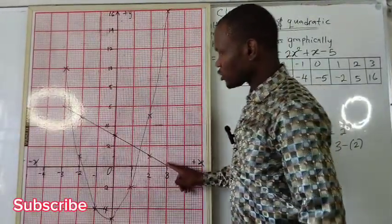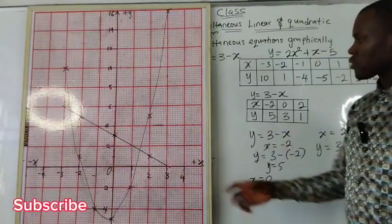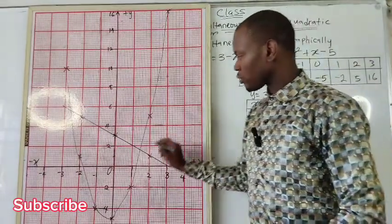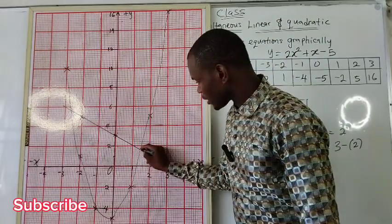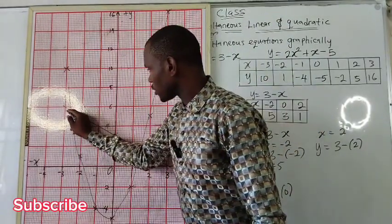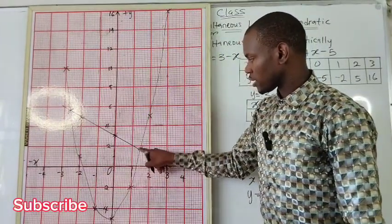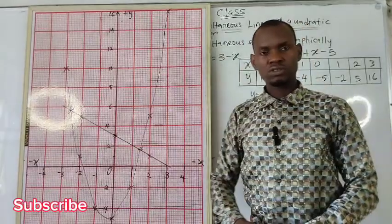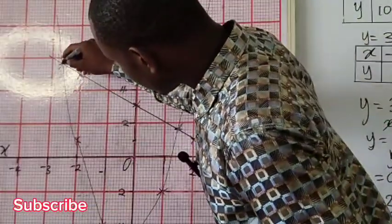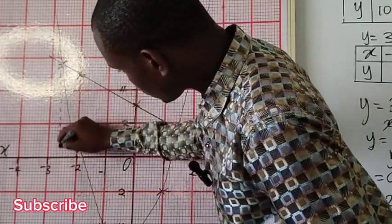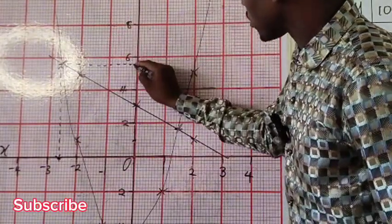We now have our straight line and our quadratic curve. The next thing is to determine the roots of the equation. The roots are the points where the curve and the straight line intersect. The curve touches the straight line at two points. We trace both intersection points down to the x-axis and across to the y-axis to read off the coordinate values.